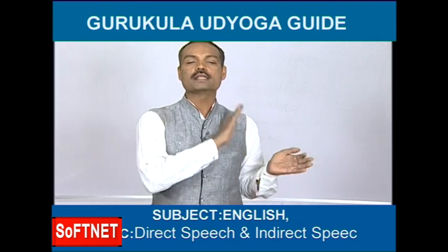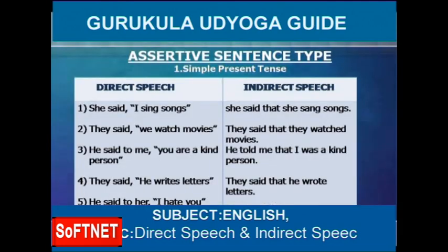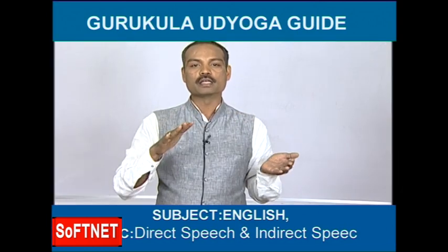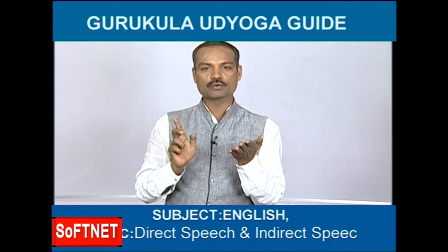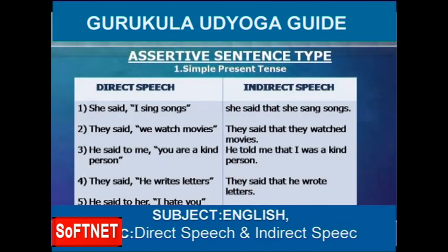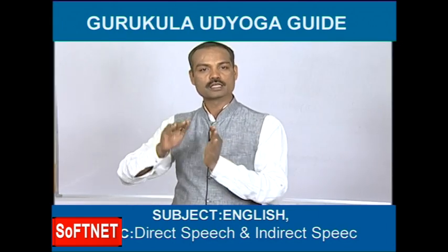Third example: 'He said to me, you are a kind person.' 'Said to' becomes 'told', 'me' is written as it is. Comma becomes 'that'. So: 'He told me that...' In inverted commas: 'you are a kind person' — imagine he said this to you. When you report it to someone else, 'you' refers to you, which becomes 'I'. He was saying 'you are kind' to you, so in indirect speech: 'He told me that I was a kind person.'